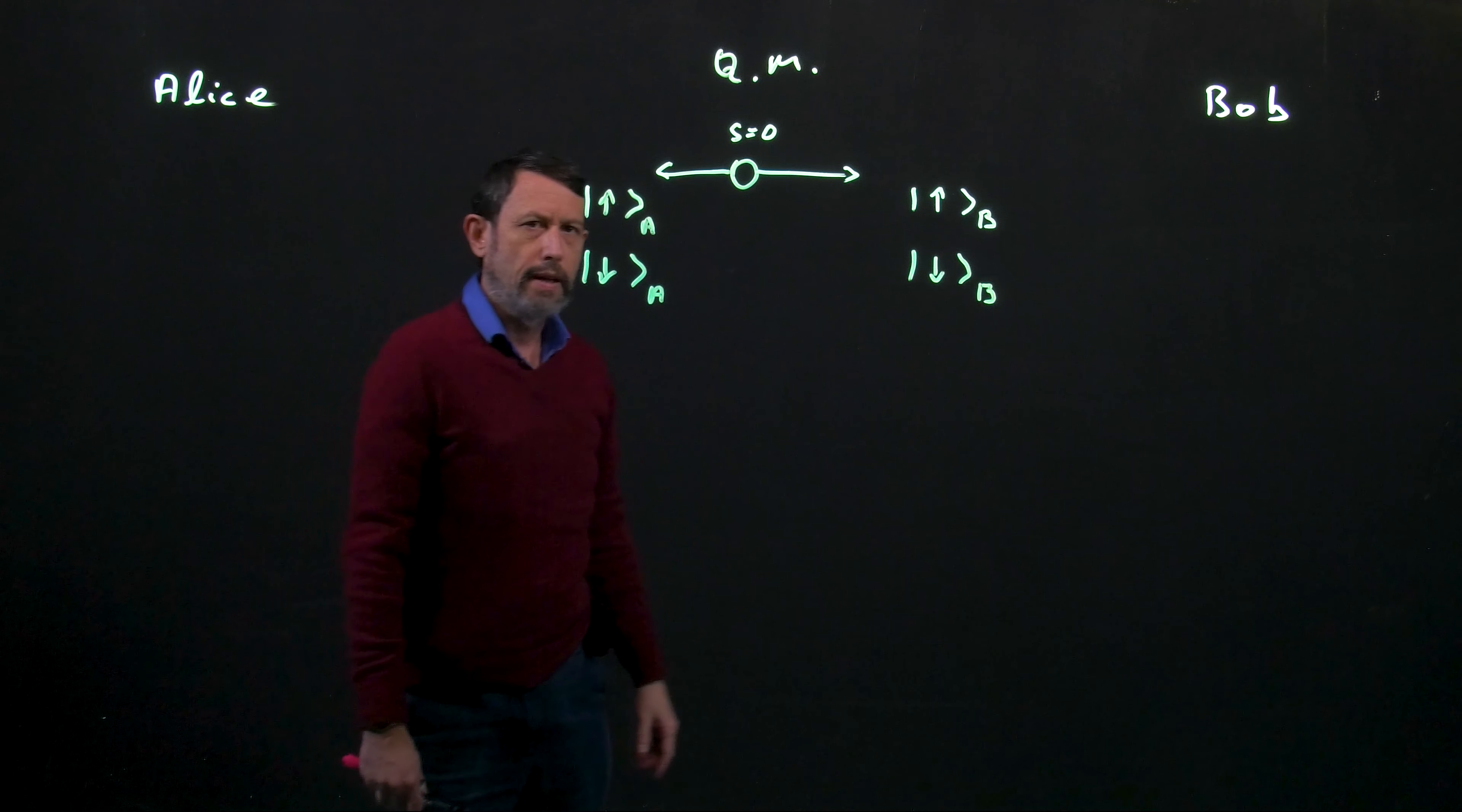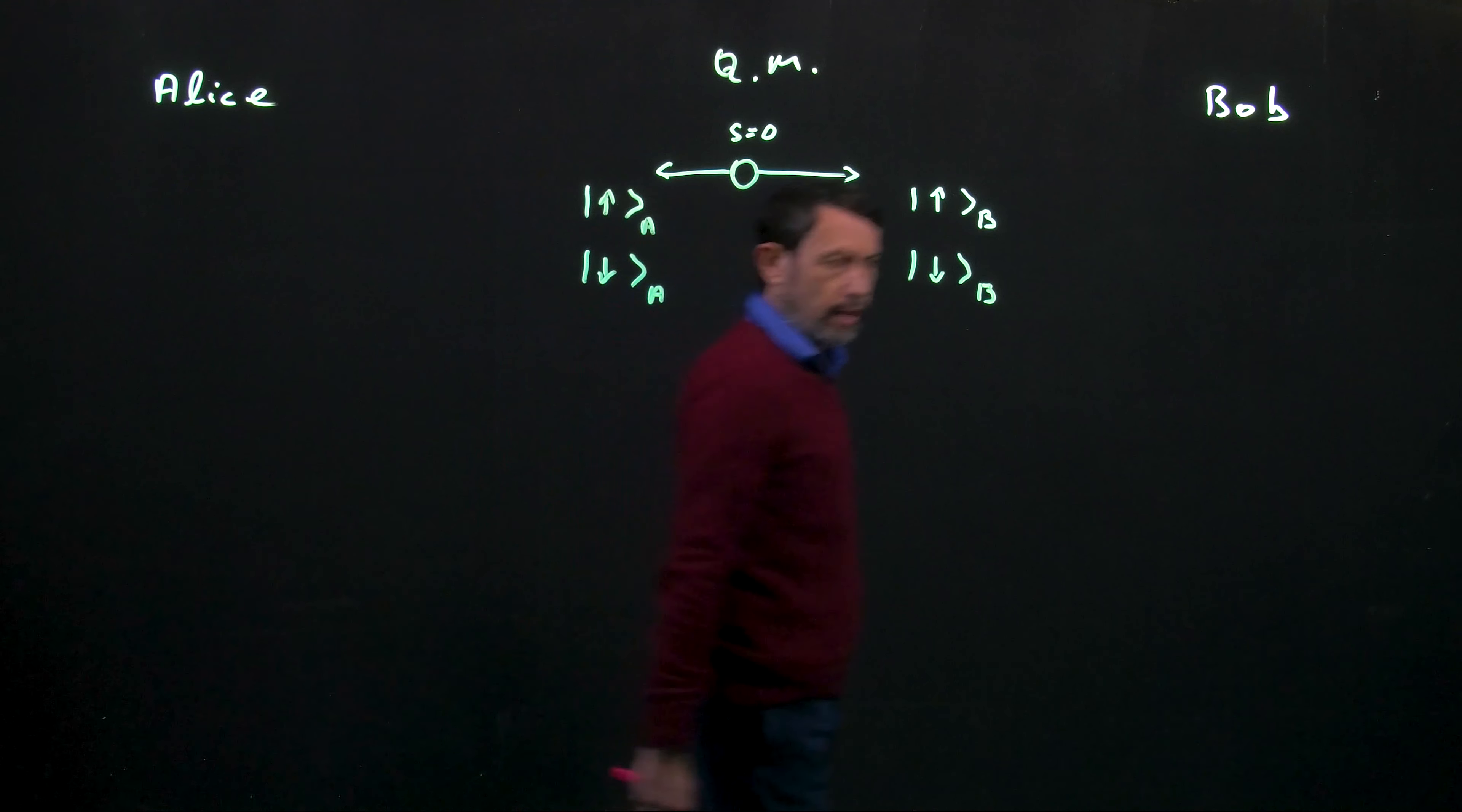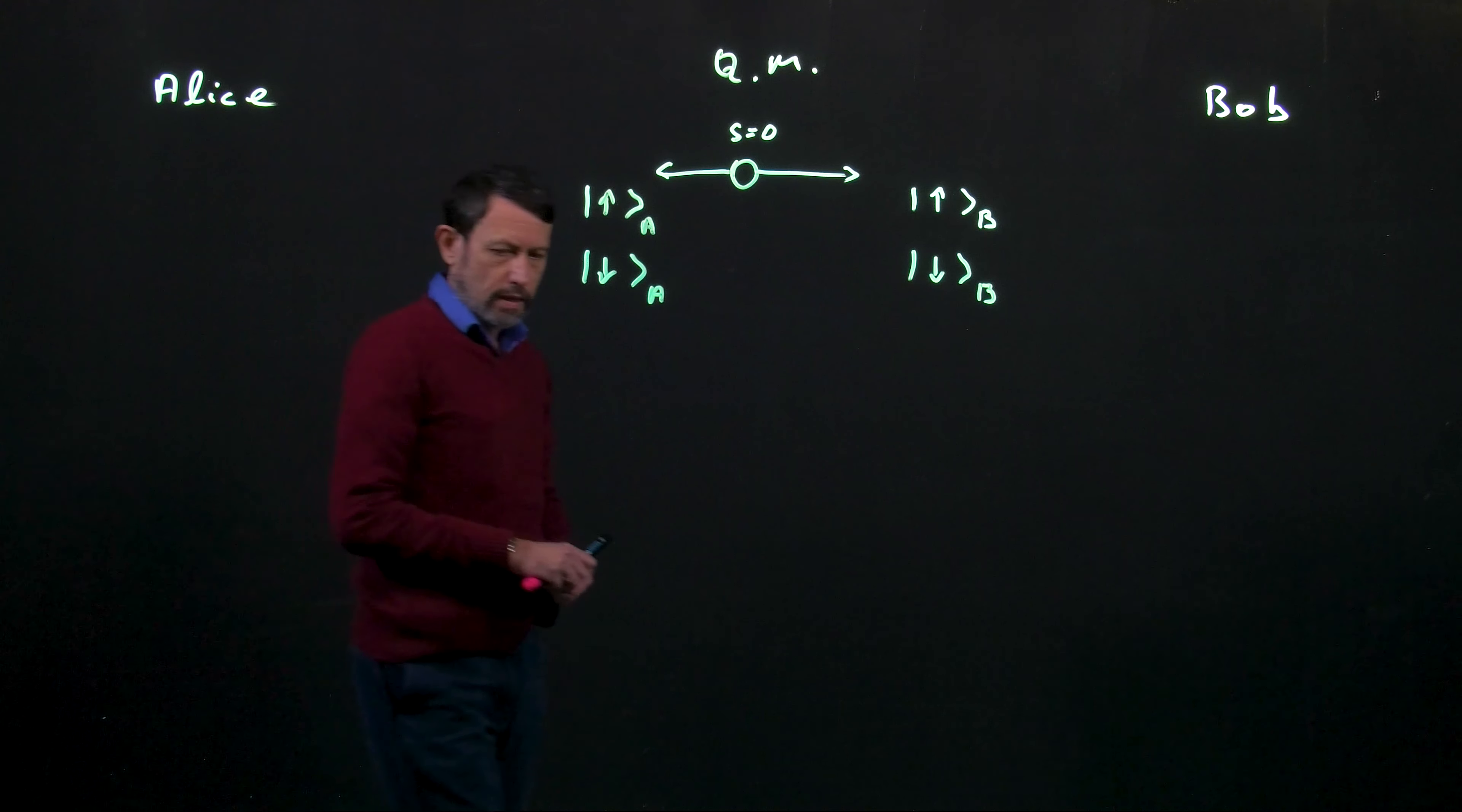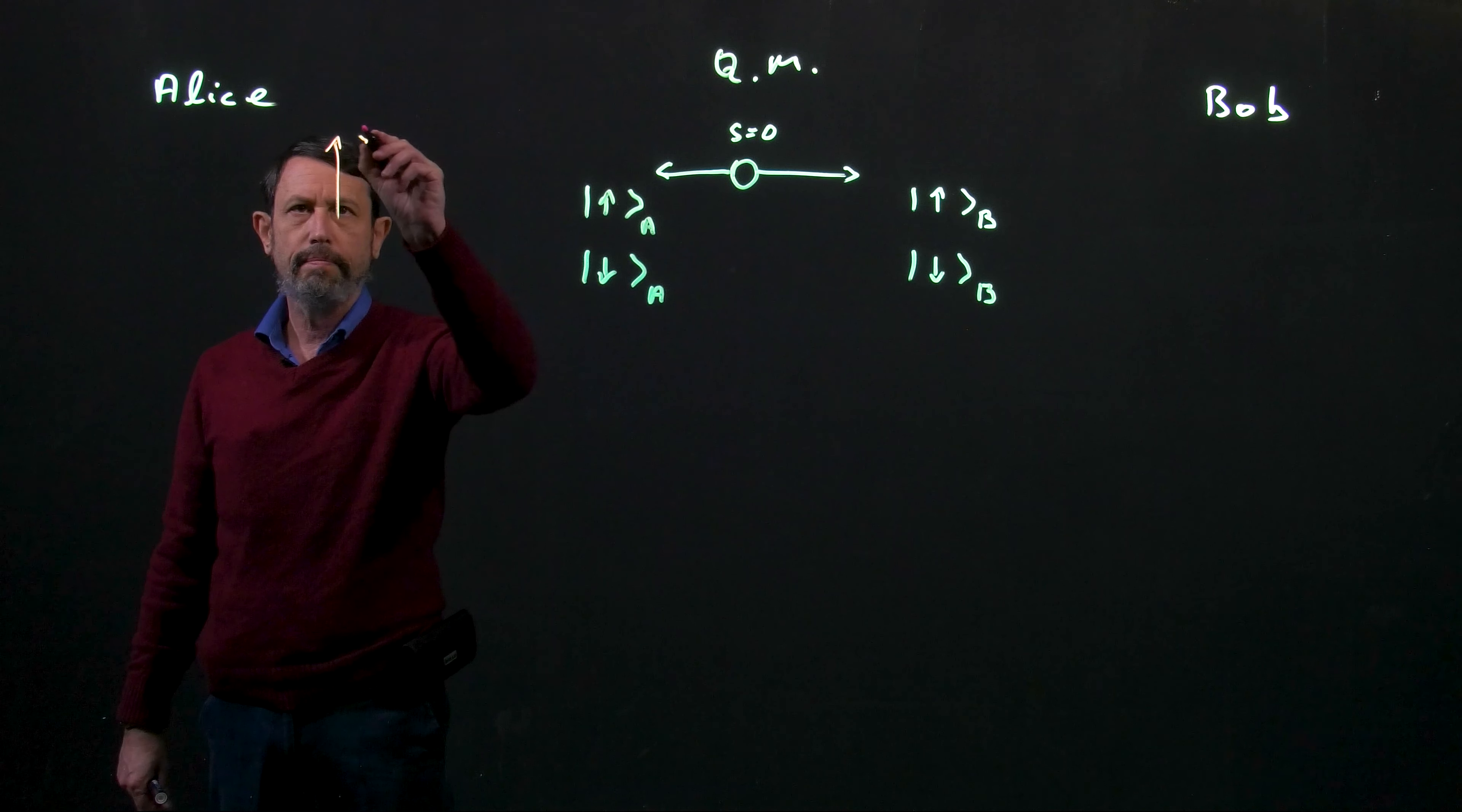And now what do we know? Since the original spin was equal zero, the combination must be zero. Therefore if Alice has a particle with spin up Bob has one with spin down and vice versa. Okay, as in the previous clip, Alice and Bob perform at random one of two measurements.